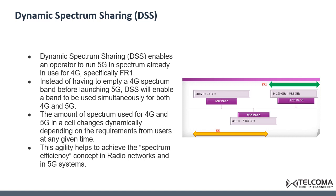Based on this, vendors have positioned dynamic spectrum sharing as a primary way to help operators evolve their 4G networks to support 5G, because of the challenge of limited spectrum resources. Instead of having to empty a 4G spectrum band before launching 5G — which could take years — dynamic spectrum sharing will enable the band to be used simultaneously for both 4G and 5G access. One key benefit is that operators can dynamically change the amount of spectrum allocated to 4G versus 5G depending on user requirements at any given time.